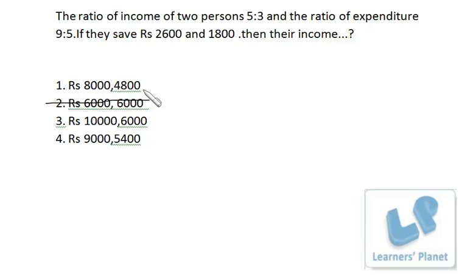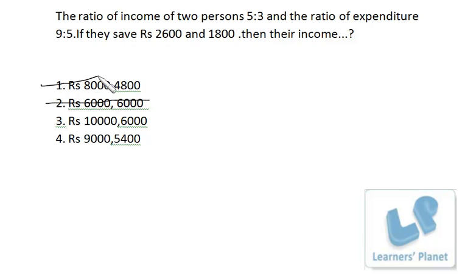If you deduct 2600 from 8000 you get 5400, and 1800 from 4800 you get 3000. Now 5400 is a multiple of 9 — 9 times 6 is 54 — and 5 times 6 is 30, so the ratio 5400:3000 equals 9:5. This option is correctly matching.